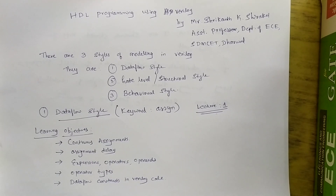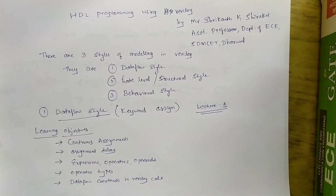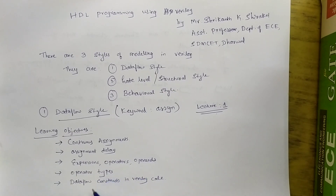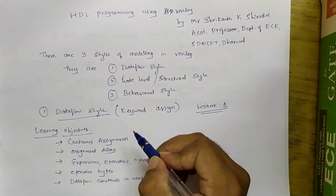Welcome to the viewers. Today we are starting up with lecture 1 of data flow style of modeling. In the introduction session, we discussed about what we are studying, what are the different styles of modeling, and what are the learning objectives. Just to have a recap, we will be studying about continuous assignments, assignment delays, expressions, operators, operands, operator types, and data flow constructs in Verilog code. We will focus on continuous assignments in today's session.